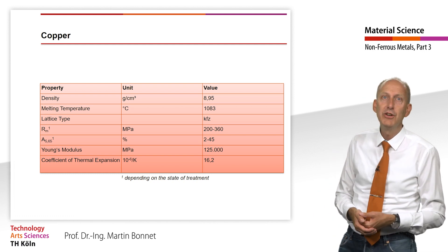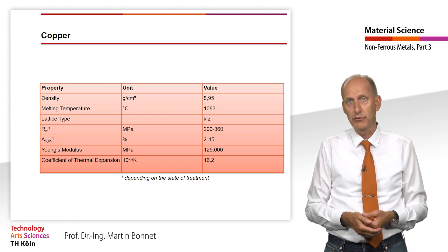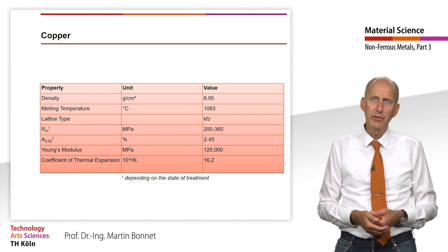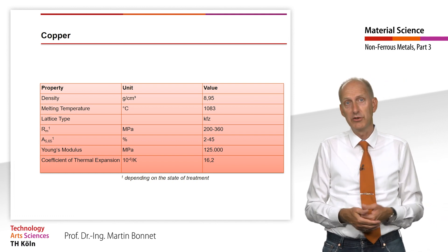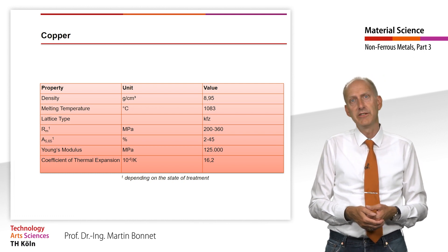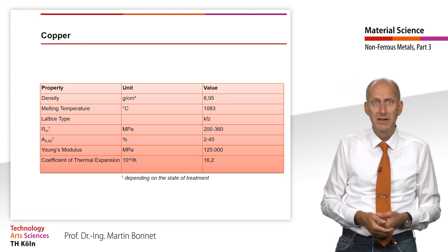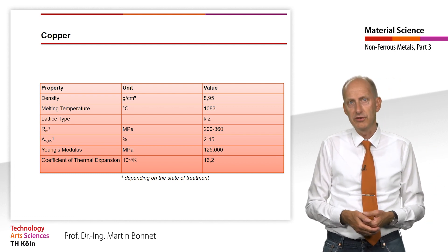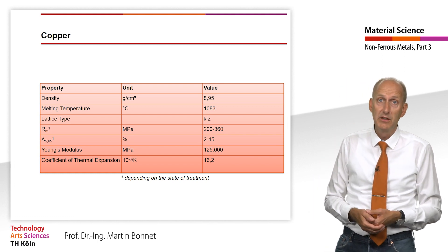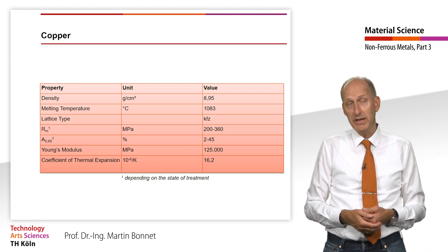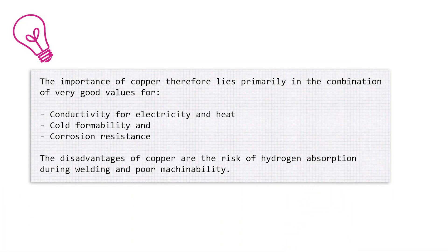The next heavy metal we want to look at is copper and copper alloys. The strength of copper is lower than that of steel, and the Young's modulus of 125,000 MPa is only slightly more than half as high. On the other hand, the formability of copper is very good compared with many other metallic materials due to the face-centered cubic lattice. The importance of copper lies primarily in the combination of very good values for conductivity — for electricity and heat — cold formability, and corrosion resistance.